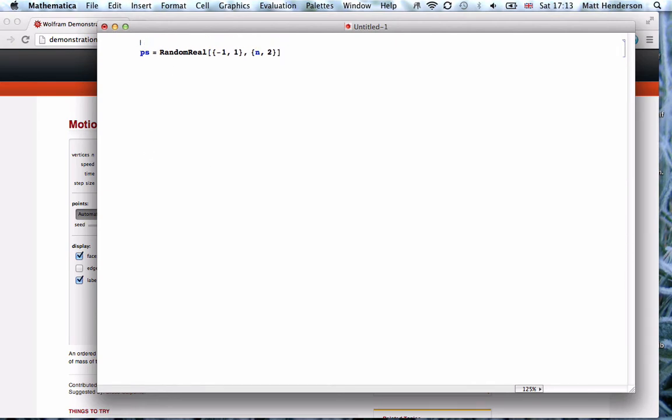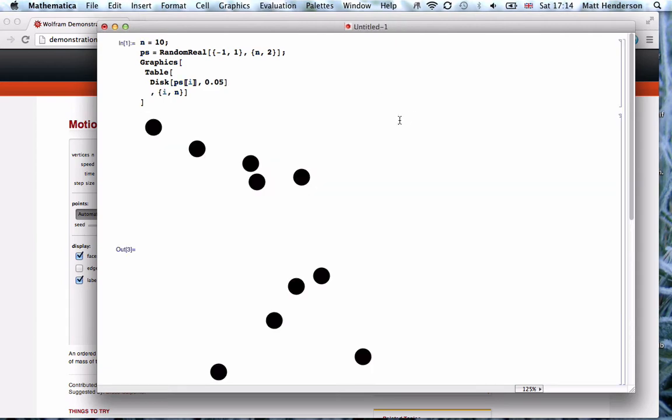Set n to ten for now. Then let's draw them. We have a table with i running all the way up to n, a disk centered at that point with radius 0.05. That gives us a bunch of points.